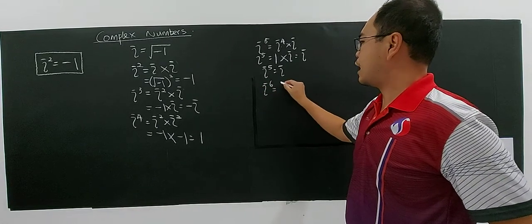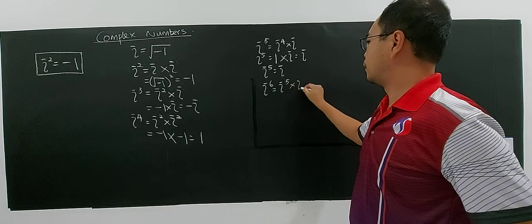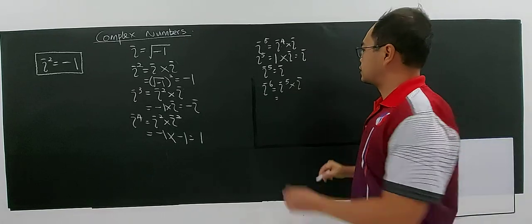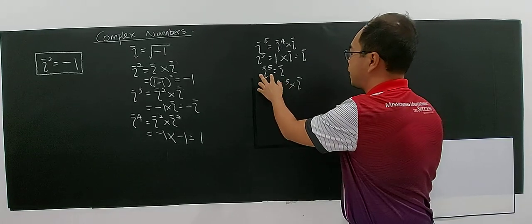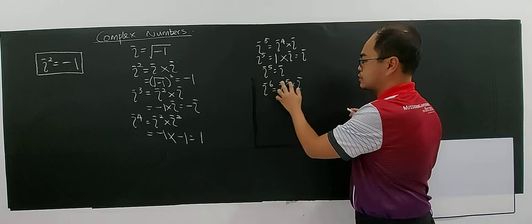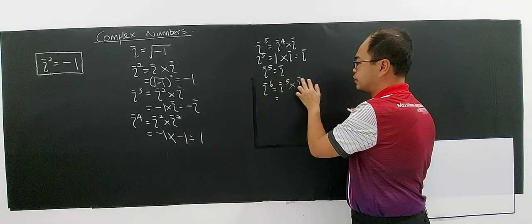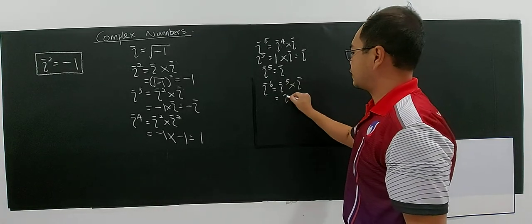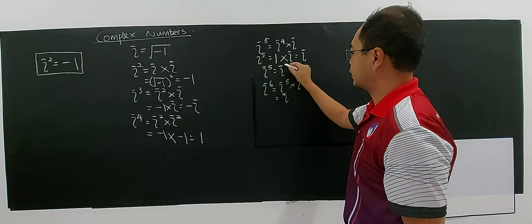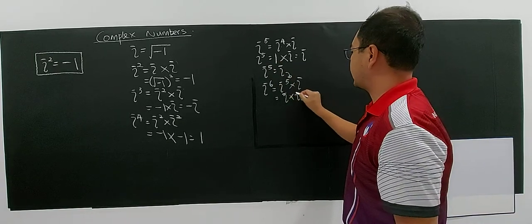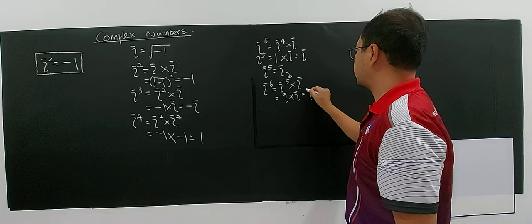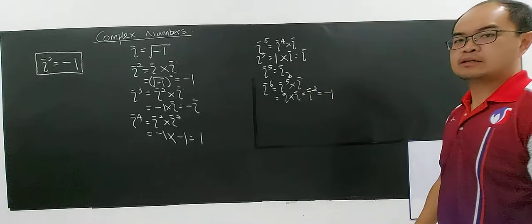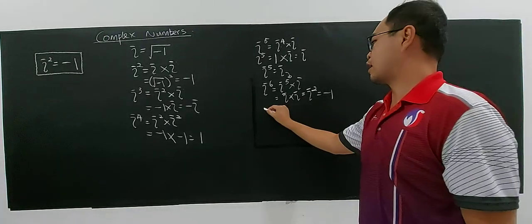Now i power six: five plus one is six based on index rules. i power five is i, so i multiplied by i gives you i to the power two, which gives back negative one. So i power six equals negative one. You can see it's already repeating.